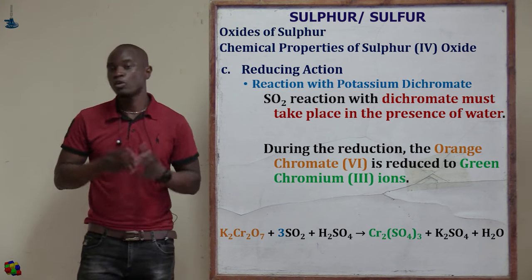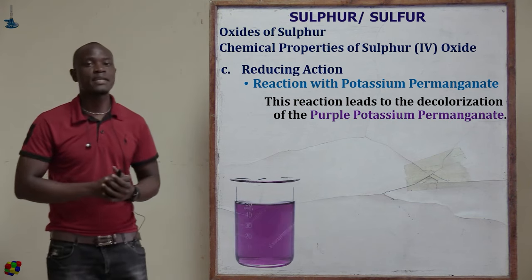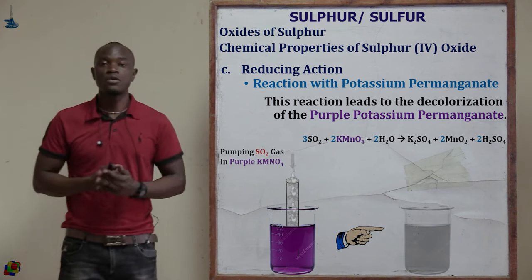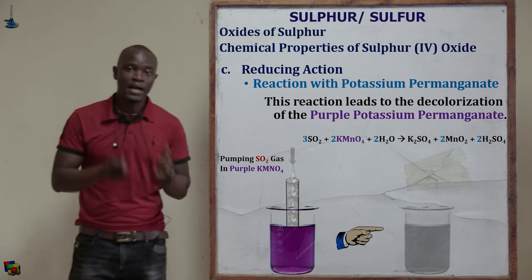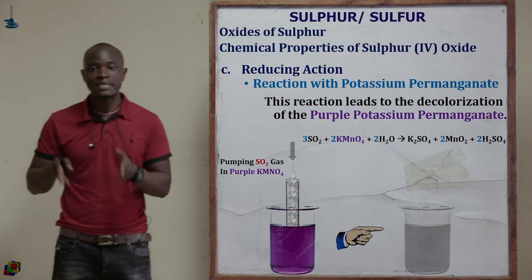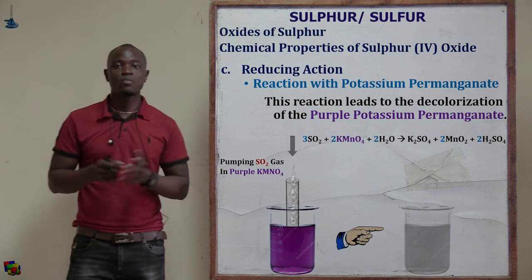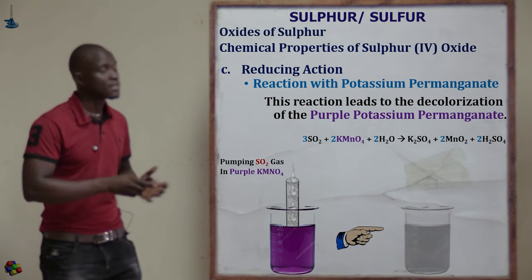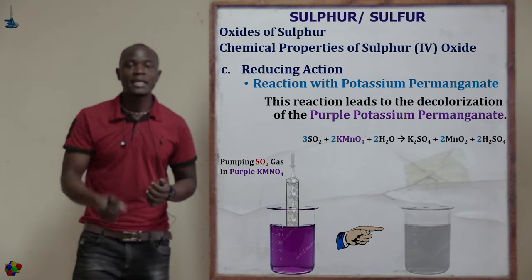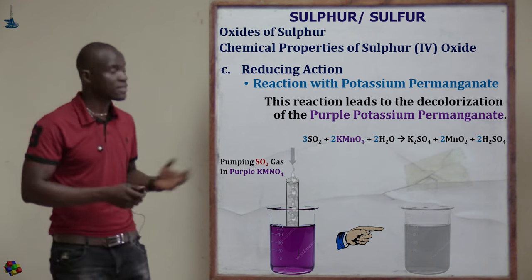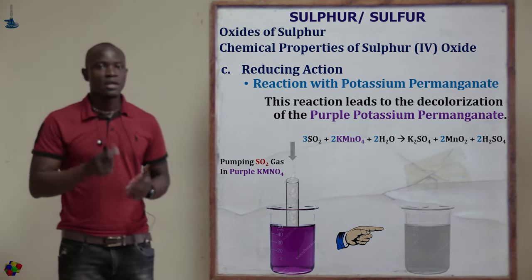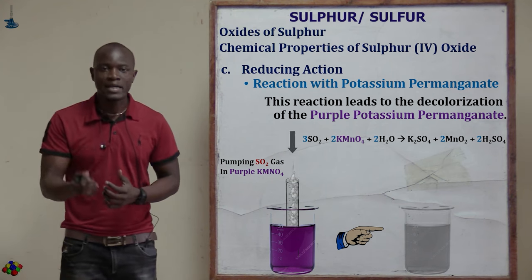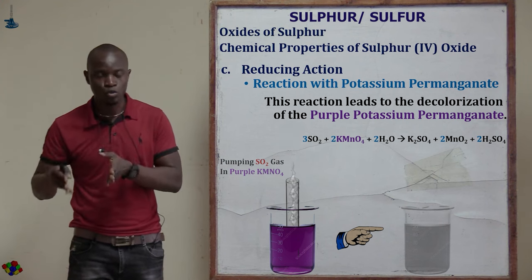Sulfur(IV) oxide also reduces acidified potassium permanganate, discolorizing its purple color to colorless. In the equation, sulfur(IV) oxide reacts with potassium permanganate in the presence of acid to produce potassium sulfate, manganese(II) ions, and sulfuric acid. The purple manganate(VII) ions are reduced to colorless manganese(II) ions, while sulfur(IV) oxide is oxidized.